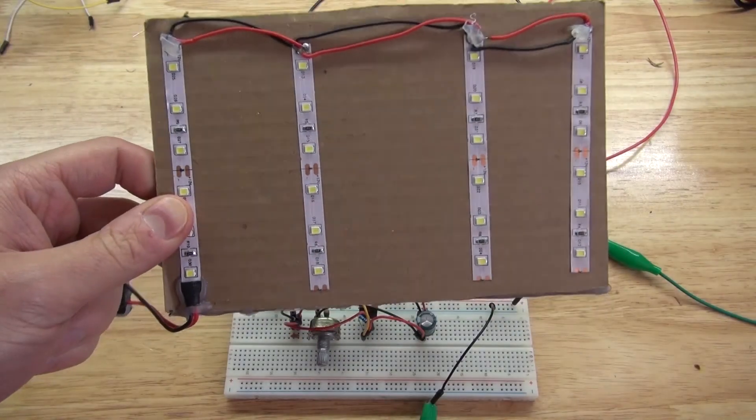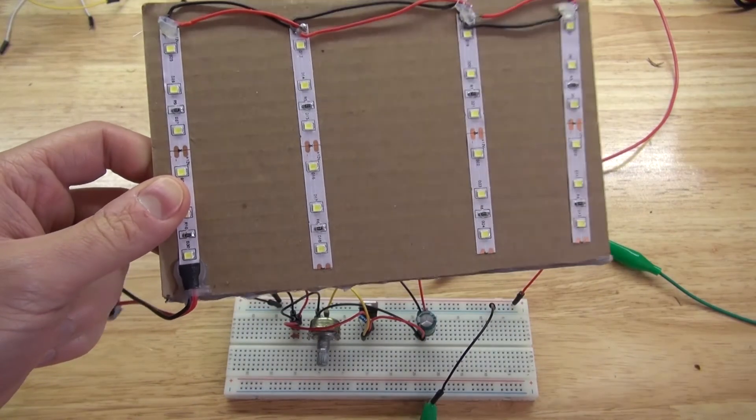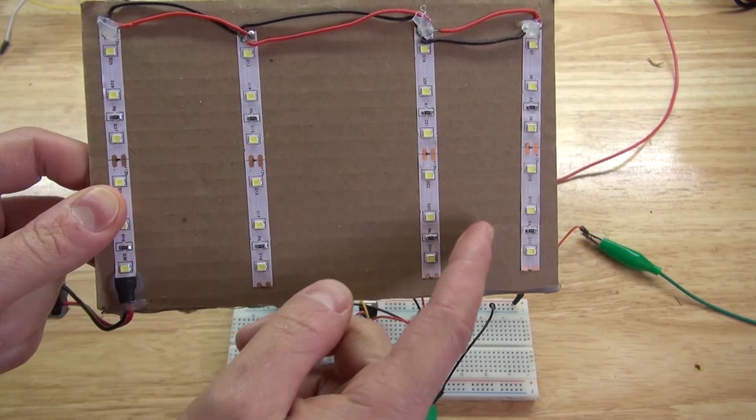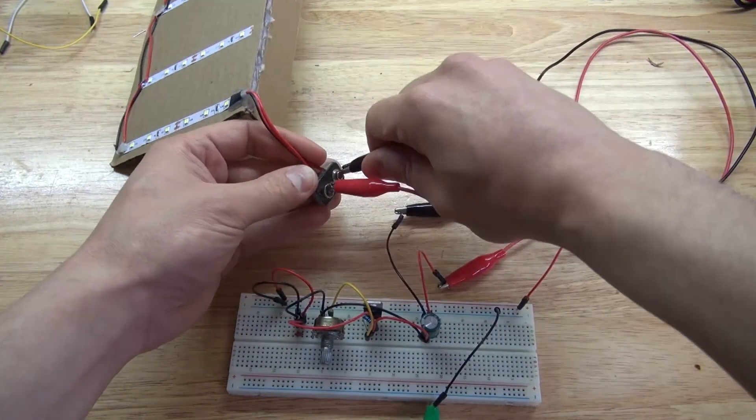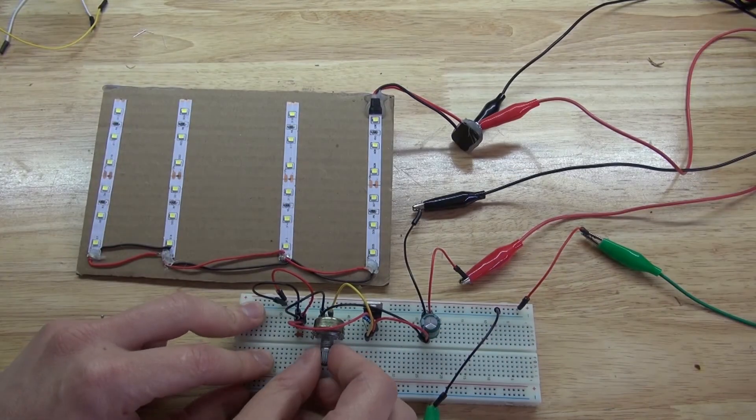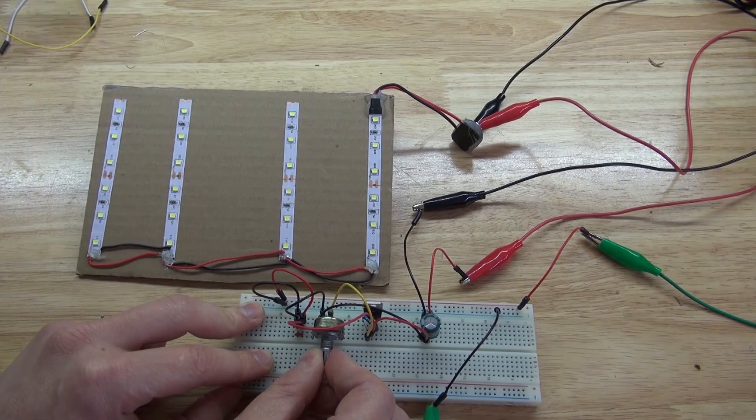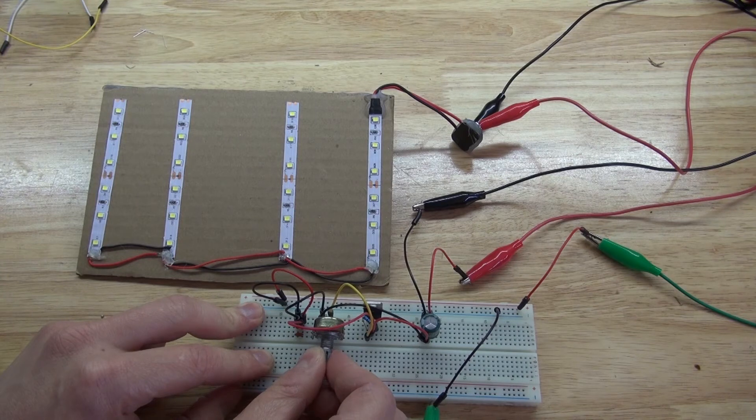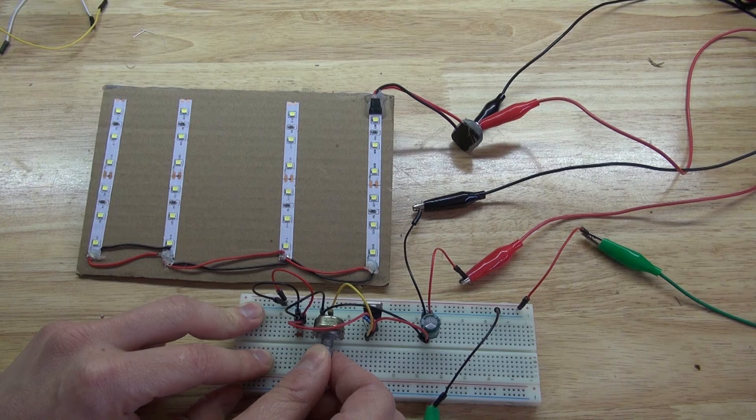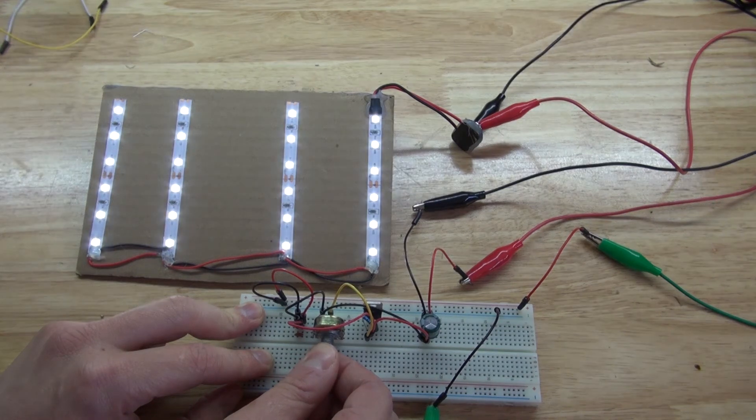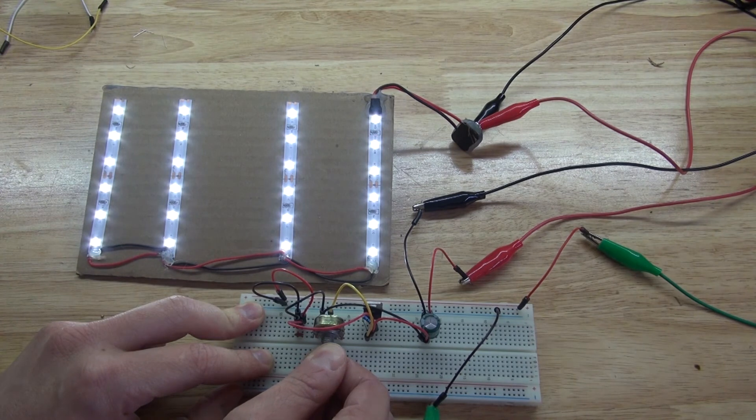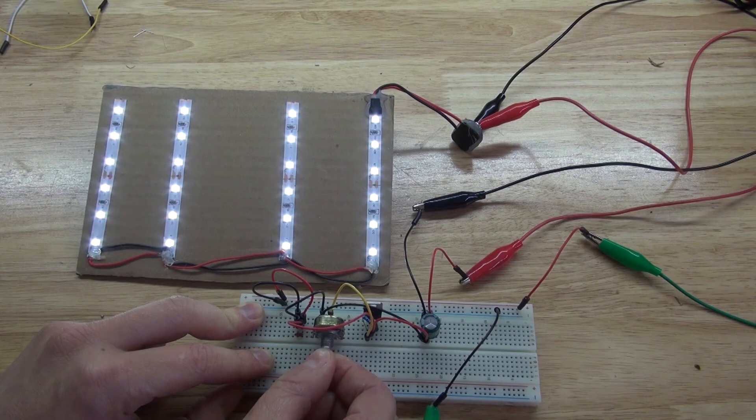Next, let's control the brightness of the LEDs. Repeat the same process, connect to the positive and negative, and there. Let's turn up the potentiometer. It works. LEDs are growing brighter and brighter. And now let's dim it to make it go darker and darker.